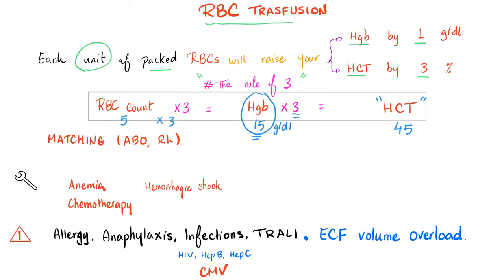Clinical uses of red blood cell transfusion include anemia, chemotherapy (because it can destroy your bone marrow leading to anemia), and hemorrhagic shock. First give normal saline, then watch the red blood cell count; if it doesn't normalize, the patient may need red blood cell transfusion — look at RBC count, hemoglobin, and hematocrit. Side effects: allergy, anaphylaxis, TRALI, ECF volume overload, and infections including HIV, hepatitis B, and hepatitis C. Most countries screen blood for these viruses, but very few countries screen for CMV. In rich countries, CMV infections from blood transfusion are very common.